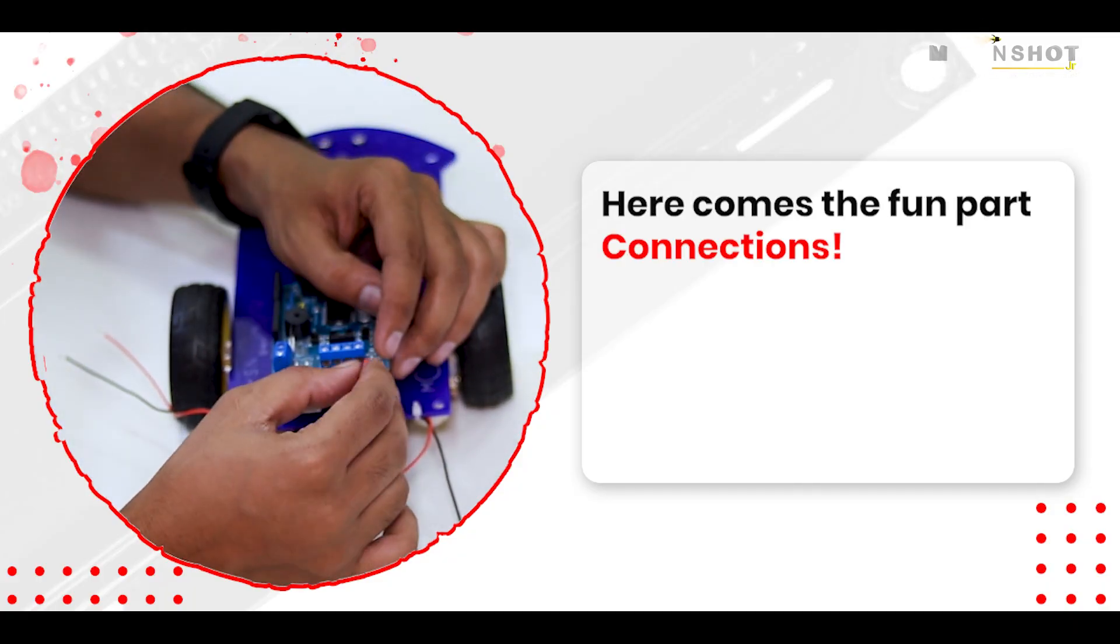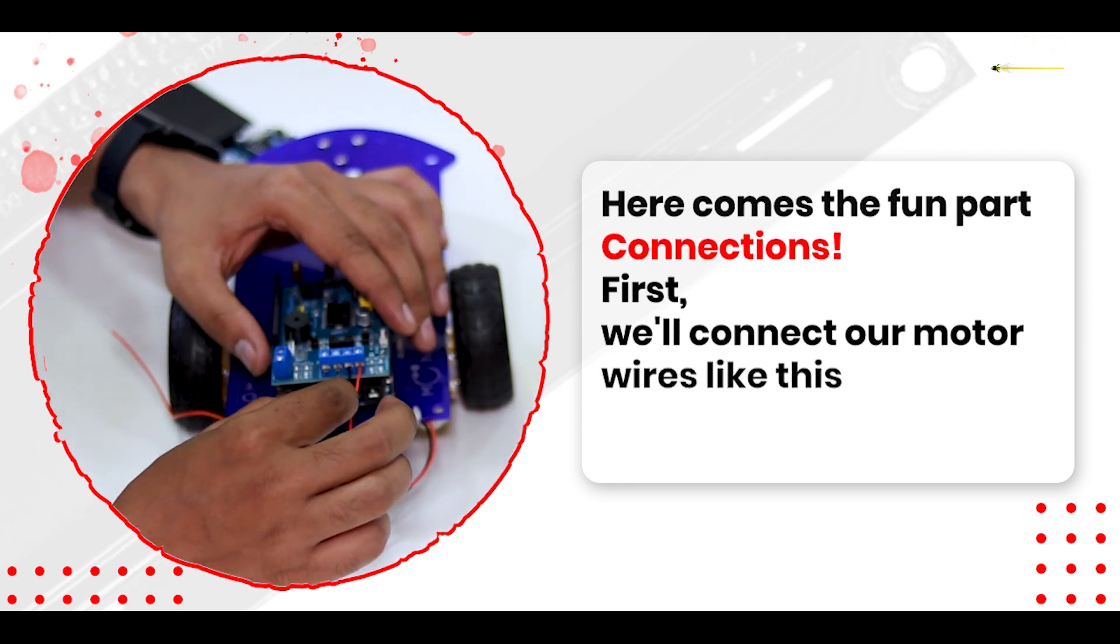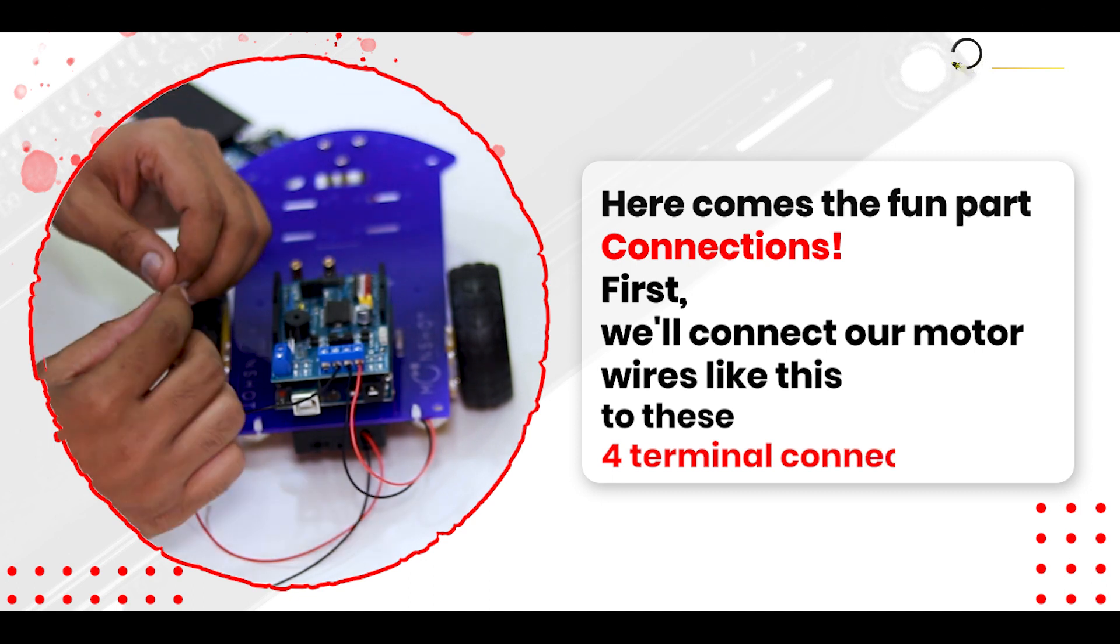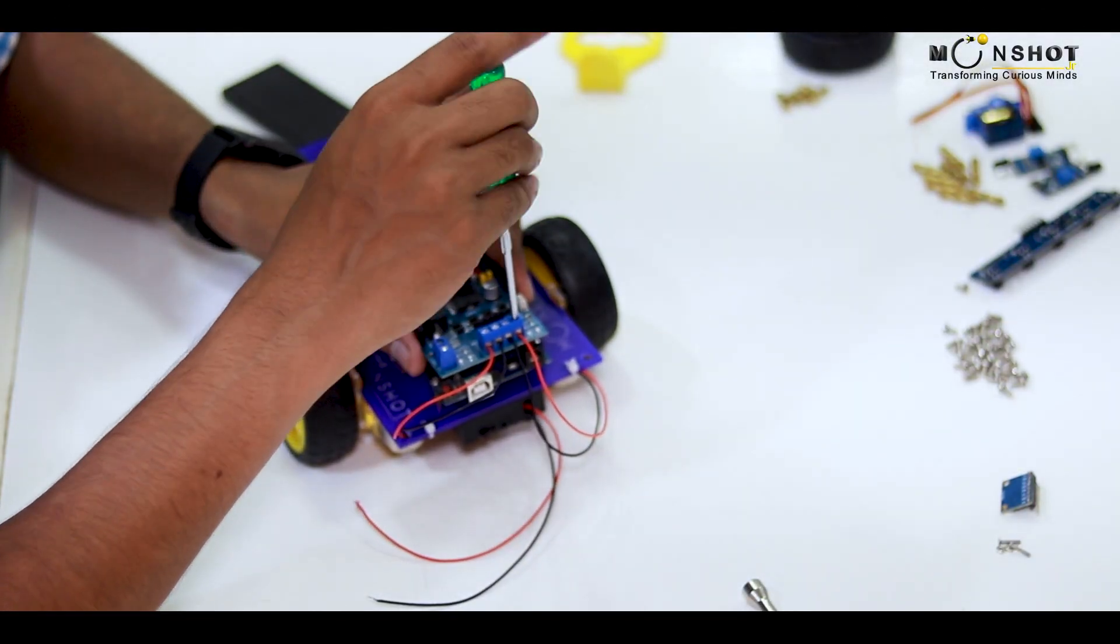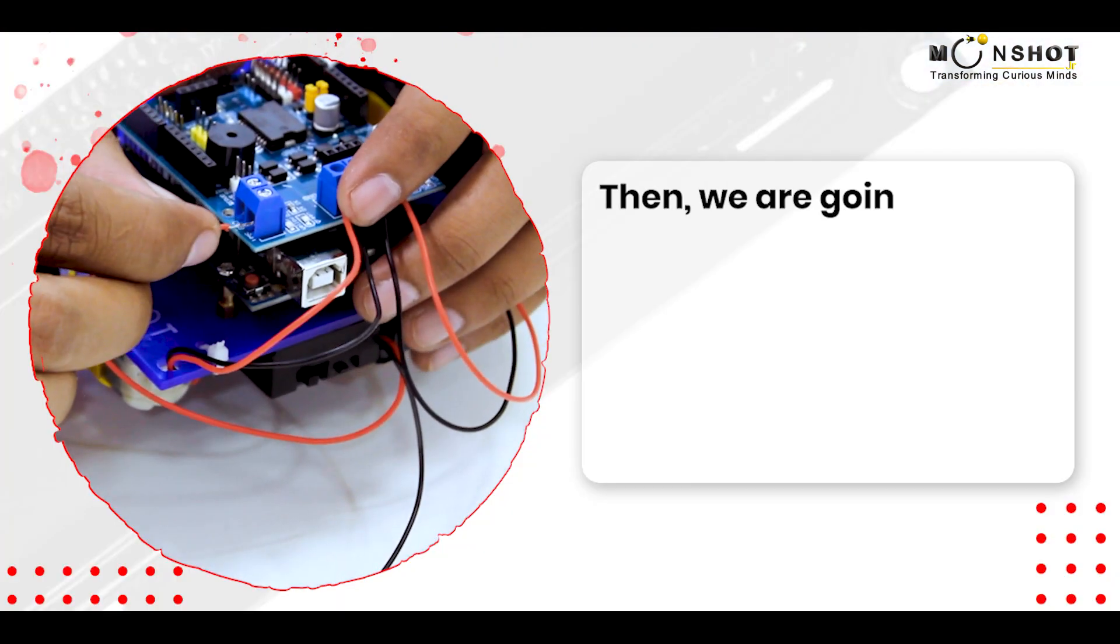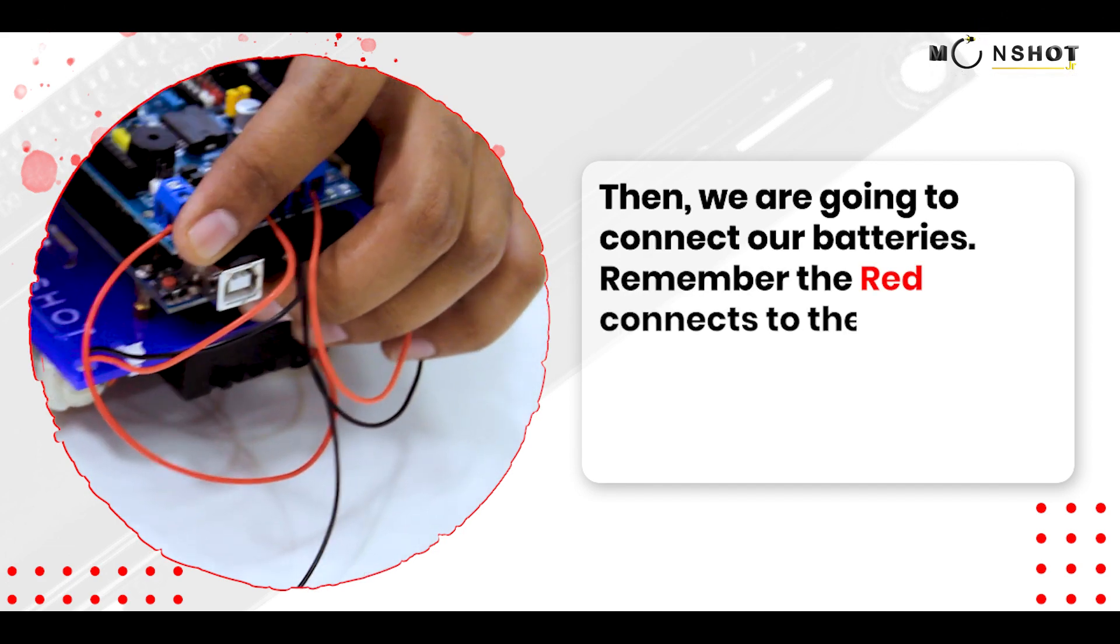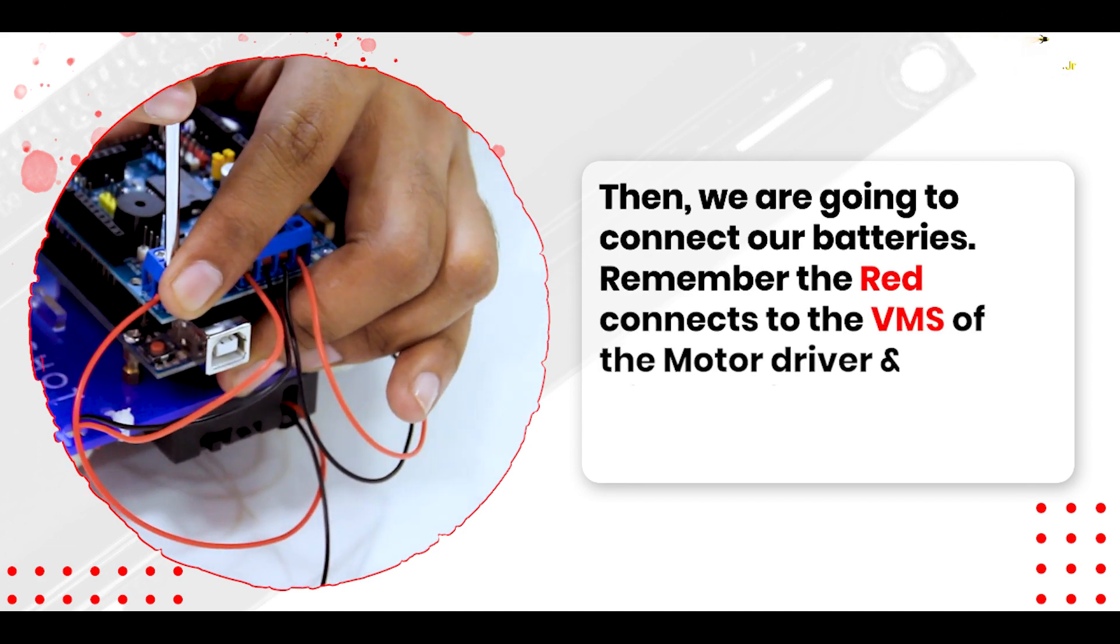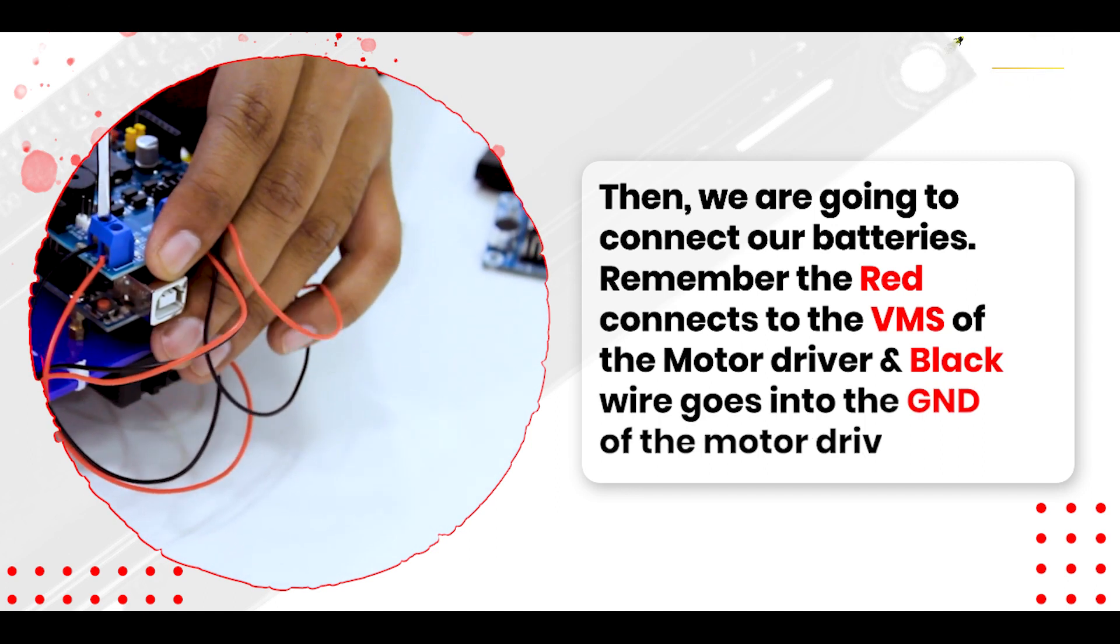Here comes the fun part. Connections. First, we'll connect our motor wires like this to these four terminal connectors. Then, we are going to connect our batteries. Remember, the red connects to the VMS of the motor driver, and black wire goes into the GND of the motor driver.